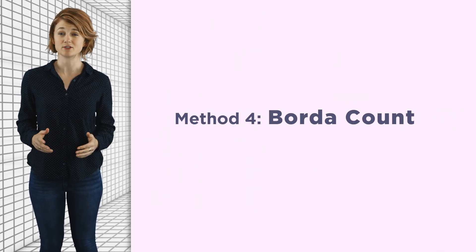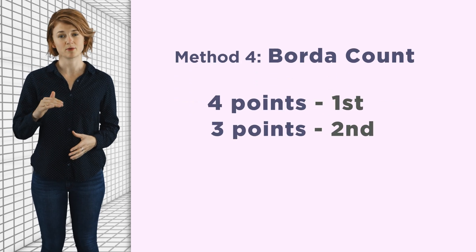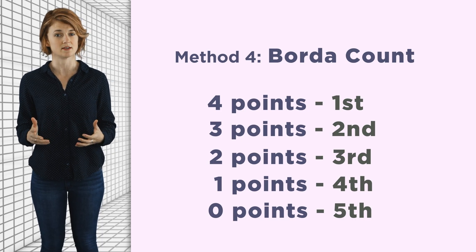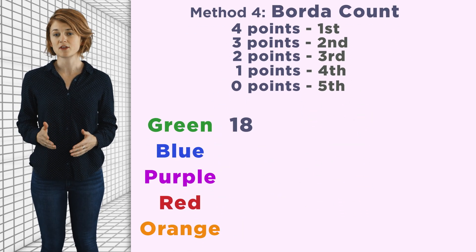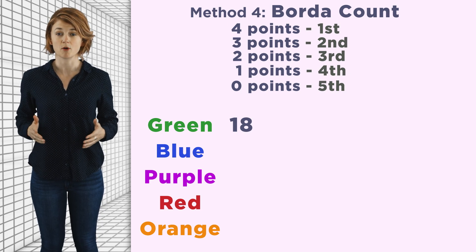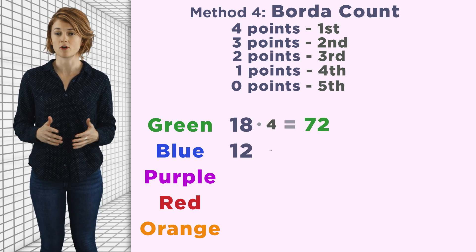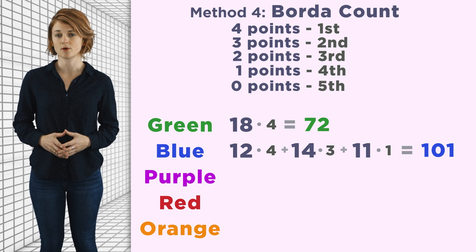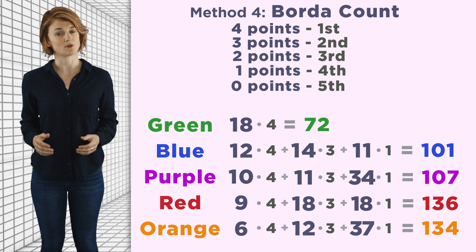Finally, the Borda count method is frequently used by sports leagues to determine award winners. Each ranking is assigned a point value: four points for first, three for second, two for third, one for fourth, and zero for fifth. A candidate's score is determined by adding together the points it receives across all ballots. Green is ranked first on 18 ballots (4 points each) and fifth on the remaining 37 (0 points each), giving green a score of 72. Blue scores 101, purple 107, red 136, and orange 134 — making red the Borda count winner.